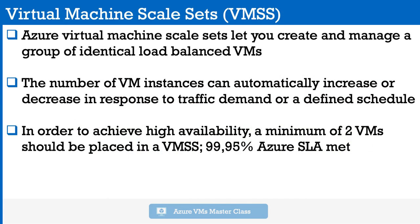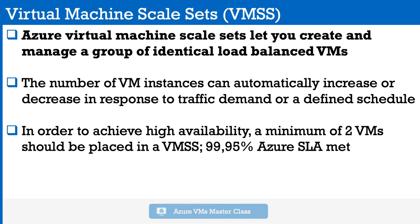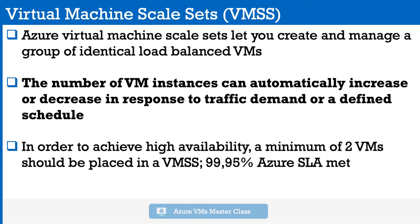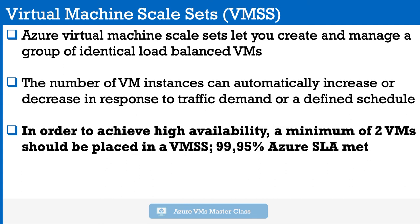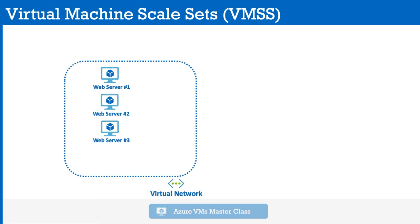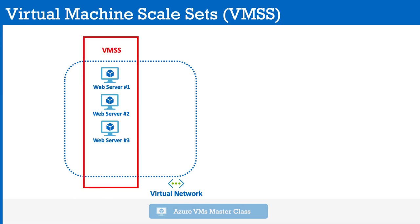Virtual Machine Scale Sets, or VMSS, let you create and manage a group of identical load-balanced VMs. The number of VM instances can automatically increase or decrease in response to traffic demand or a defined schedule. To achieve high availability, a minimum of 2 VMs should be placed in a VMSS, which helps meet the Azure SLA of 99.95% availability. We define the virtual network IP addressing space, and web servers 1, 2, and 3 sit there serving content as part of a virtual machine scale set.